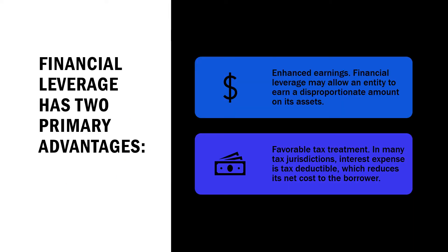Financial leverage may be favorable or unfavorable depending on the use of fixed cost funds. Favorable financial leverage occurs when the company earns more on the assets purchased with the funds than the fixed cost of their use — it is also called positive financial leverage. Unfavorable financial leverage occurs when the company does not earn as much as the funds cost. The degree of financial leverage may be defined as the percentage change in taxable profit as a result of a percentage change in earnings before interest and tax.